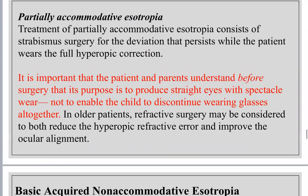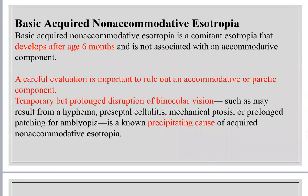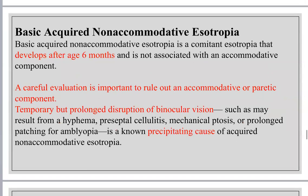Partially accommodative esotropia is extremely important for counseling. The surgery won't correct the full angle of strabismus because there is both a surgical component (non-accommodative) and an accommodative component. Glasses correct the accommodative portion and surgery corrects the other. It is crucial to counsel the parents about this distinction.